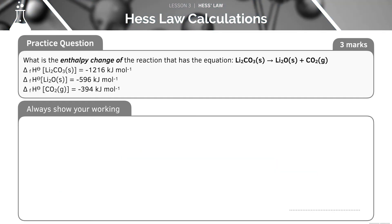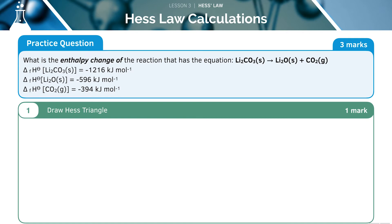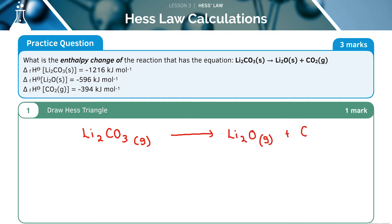Let's try this practice question. Pause the video now to have a go at it by yourself. First of all, we need to draw the Hess's Law triangle. In this instance, we're going from Li₂CO₃ solid into Li₂O solid and CO₂ gas.